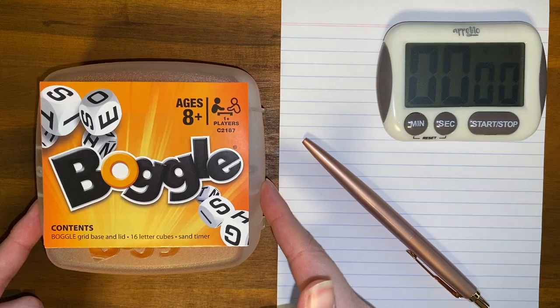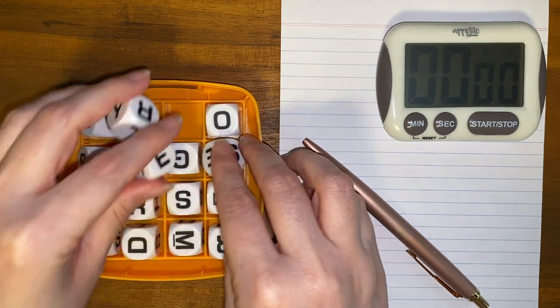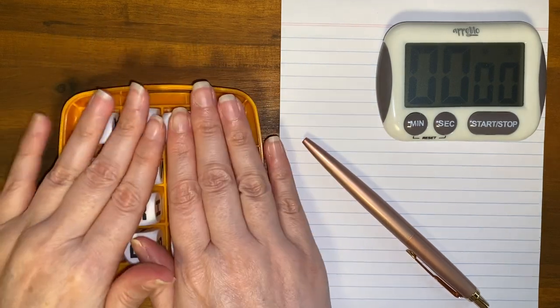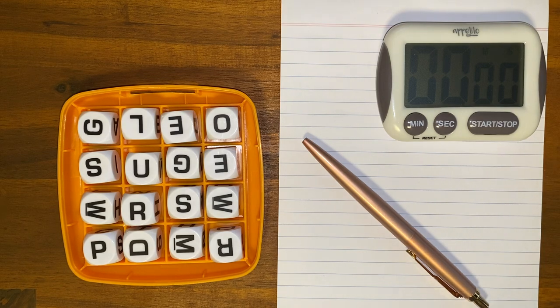We take the Boggle grid, give it a good shake until all of the letters or cubes fall into place. We then start a three-minute timer and lift the lid to reveal the letters.